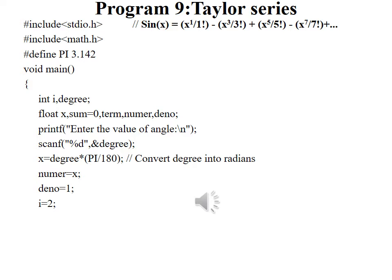We will start with the program. First it starts with the header file stdio.h and math.h. So math.h is used to support mathematical functions such as fabs absolute value, that is absolute value of floating point number, and sine value.